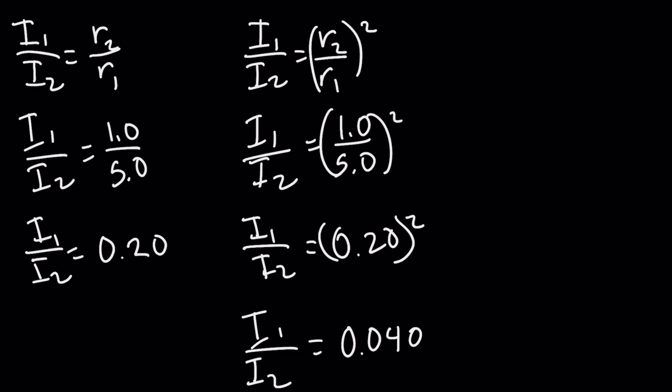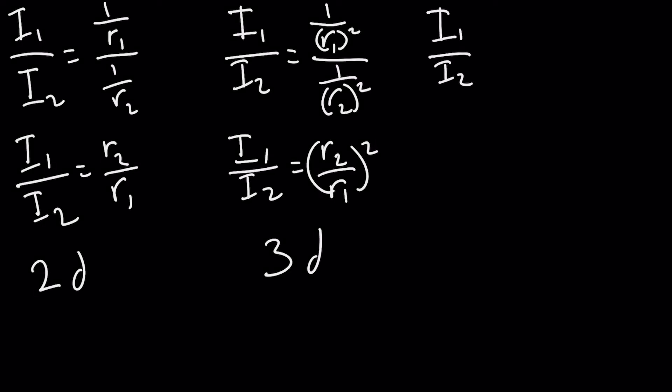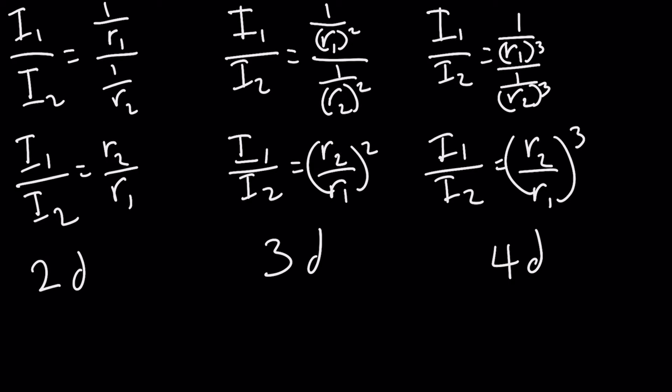Now in this hypothetical fourth dimension, we can follow the exact same procedure that we did for the third dimension by just increasing the exponent by a factor of one. This means our ratio will now be I₁/I₂ equals 1 over r₁³ over 1 over r₂³, and that eventually becomes I₁/I₂ equals (r₂/r₁)³, because this would be a function of the surface volume.